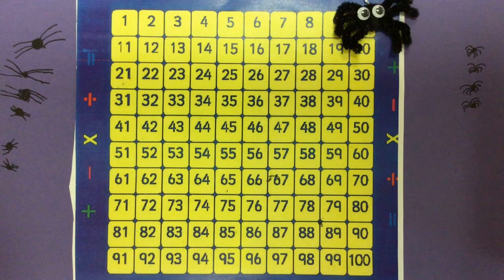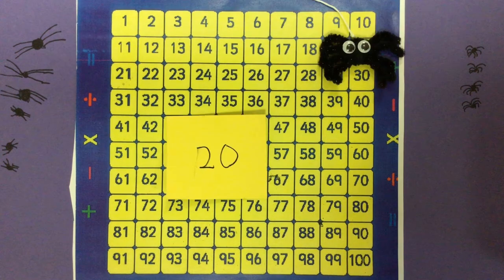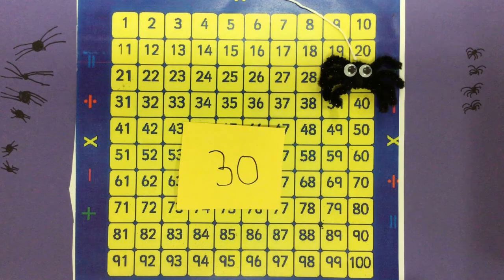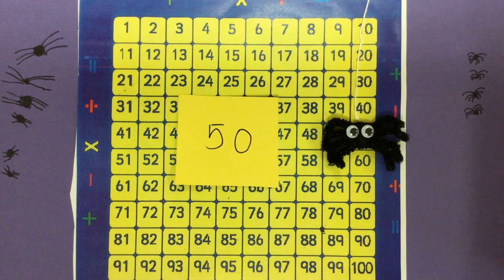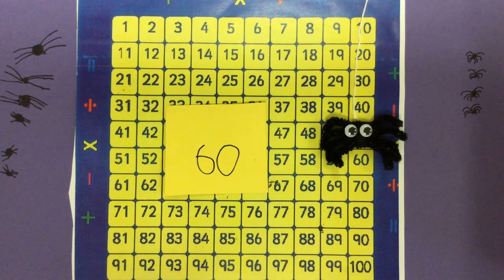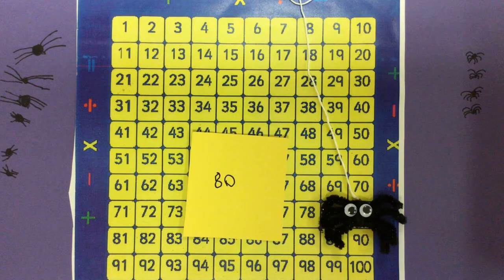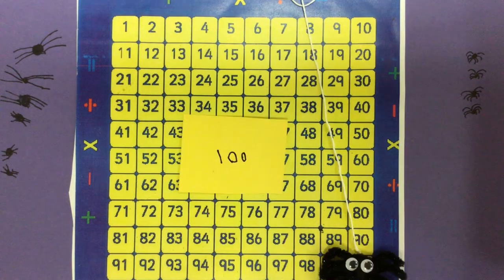We can count in tens. 10, 20, 30, 40, 50, 60, 70, 80, 90, 100.